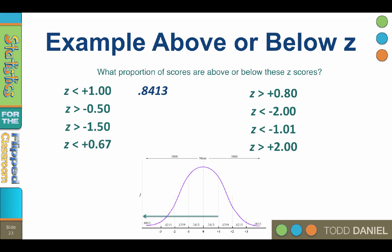Now it's your turn to try. What proportion of the scores are above a z of negative 0.50? 0.6915.